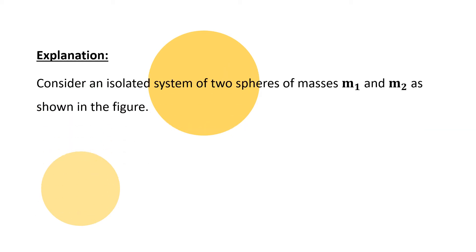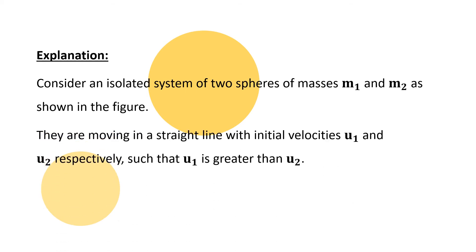So consider an isolated system of two spheres of masses M1 and M2. Sphere 1 which moves with initial velocity U1 and sphere 2 which moves with velocity U2. Here we have said that the velocity U1 is greater than U2 because M1 mass is smaller than M2. If the size of object is smaller, then the velocity will be greater.